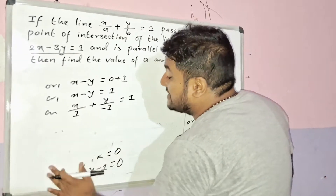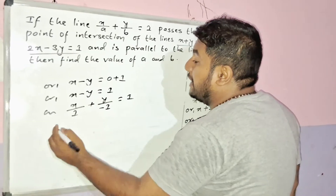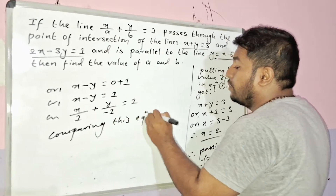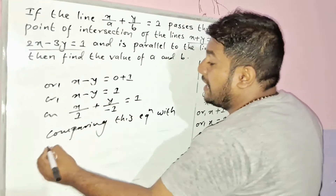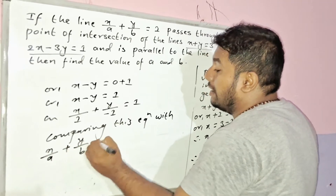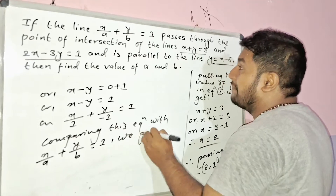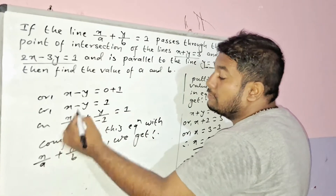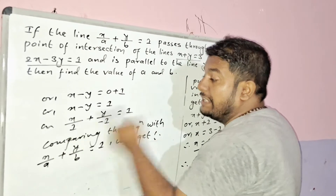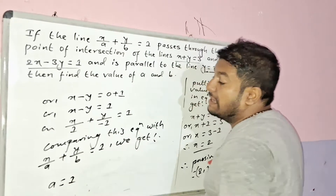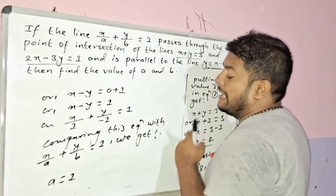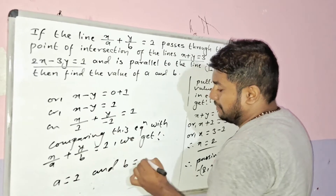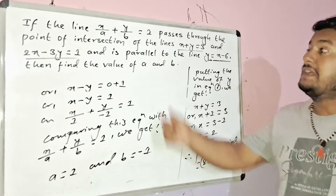From x - y = 1, we get x/1 + y/(-1) = 1. Comparing with x/a + y/b = 1, the denominator of x is 1, so a = 1. The denominator of y is -1, so b = -1.